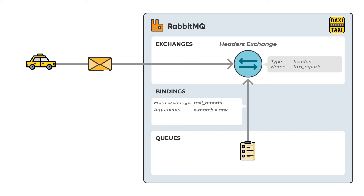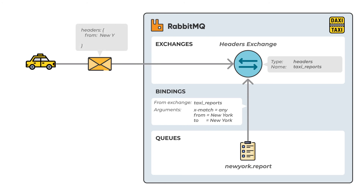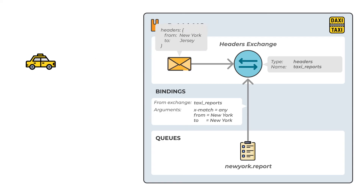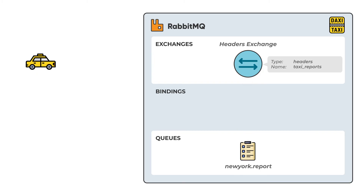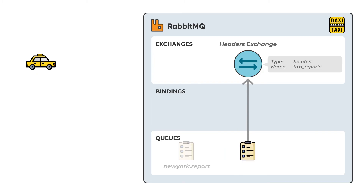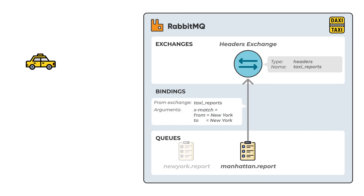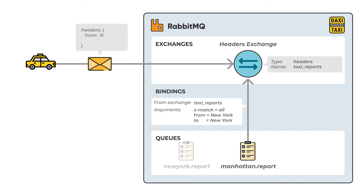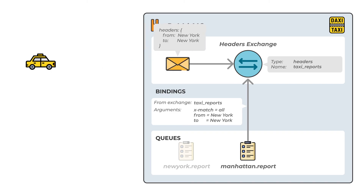In this example, one service writes a report for all taxis around Manhattan, New York, keeping track of fuel consumption and miles traveled. This data is included in the message. When X-match is set to any, together with the following arguments, the New York report receives all messages from taxis with trips from, to, or within New York. A trip that starts in New York and ends in Jersey will therefore be included. Another report may be interested in trips within New York alone. This can be achieved by simply setting the X-match to all. The new report will then only get messages where from and to are both set to New York — trips that never leave the city.